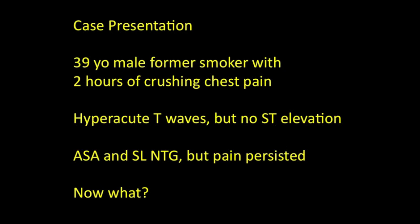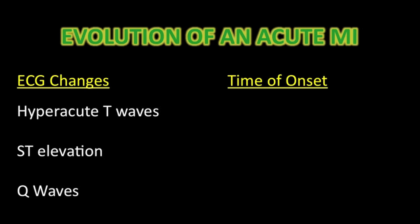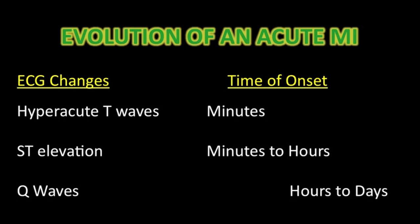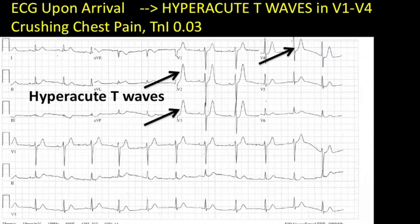So this is a pretty tough case. Let's take a moment to review the timing of EKG changes that you might see with an acute MI. Hyperacute T-waves can often occur within minutes. ST changes occur within minutes to hours. And Q-waves occur within hours to days after an acute MI. We're trained to focus on ST segment elevation, and oftentimes we don't even think about hyperacute T-waves when looking at an EKG.